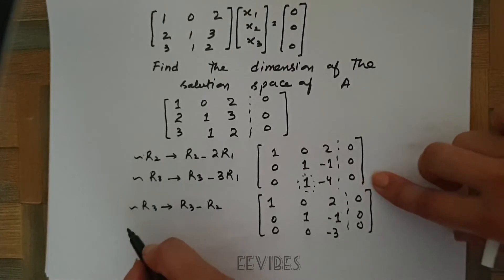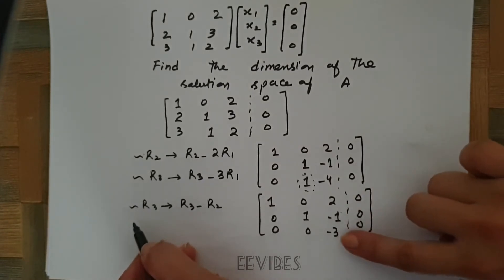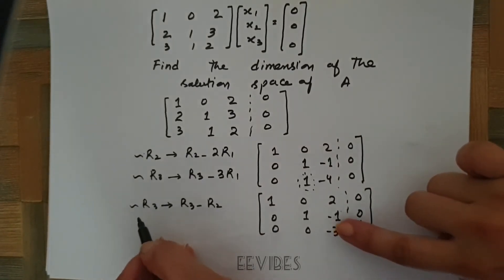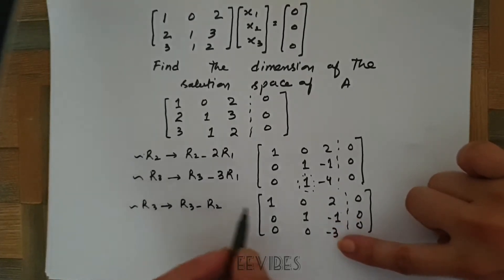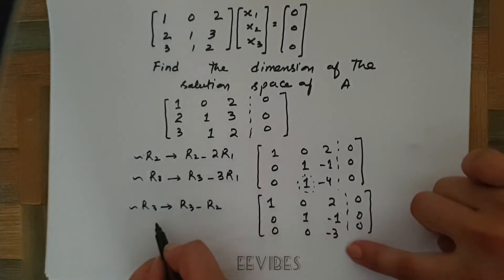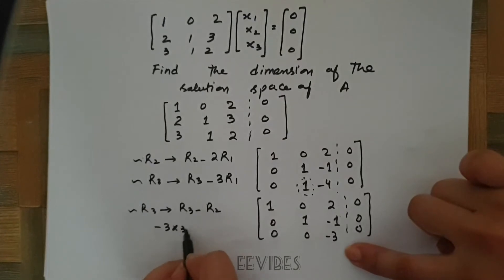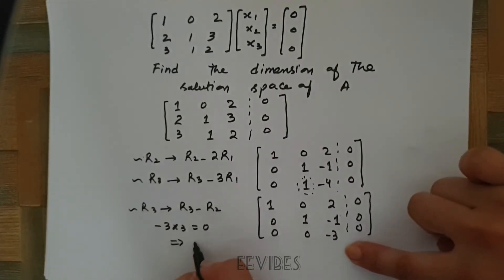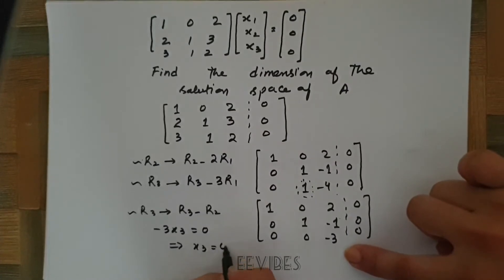Now let's just try to solve this system. Since we can clearly see here we are having minus 3x3 is equal to 0, so this will give me x3 is equal to 0.